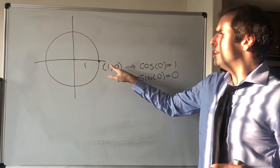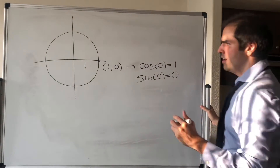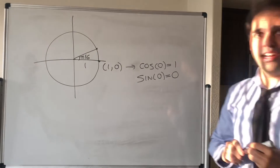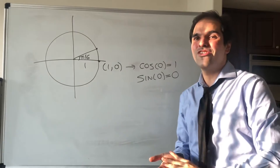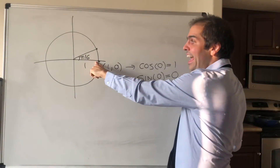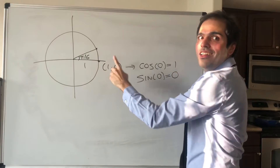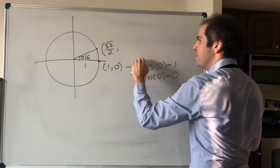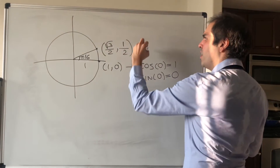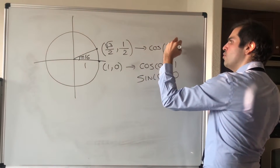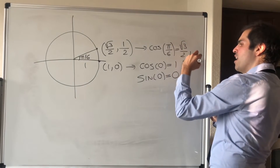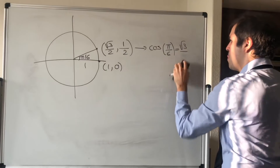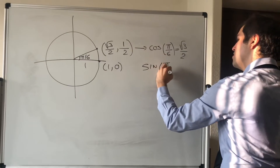Given an angle, the x-coordinate tells you cosine and the y-coordinate tells you sine. The next important angle is pi/6. You always have the choice between √3/2 and 1/2 — which is which? Notice the x-coordinate is very close to 1, so it has to be √3/2, because 1/2 is not close to 1. So the point is (√3/2, 1/2), which tells you cosine of pi/6 equals √3/2 and sine of pi/6 equals 1/2.